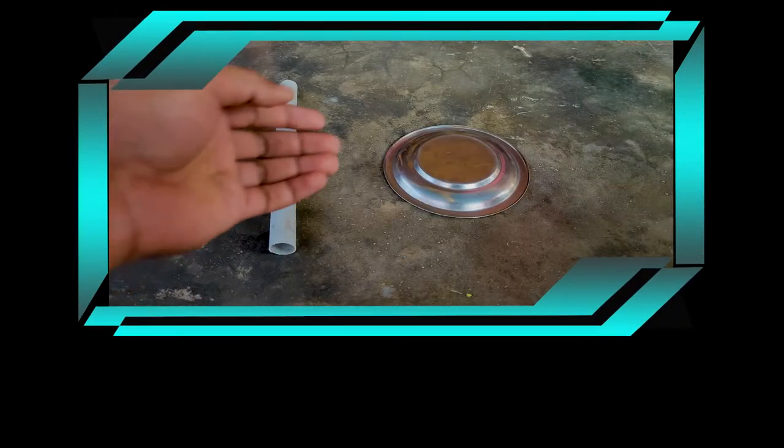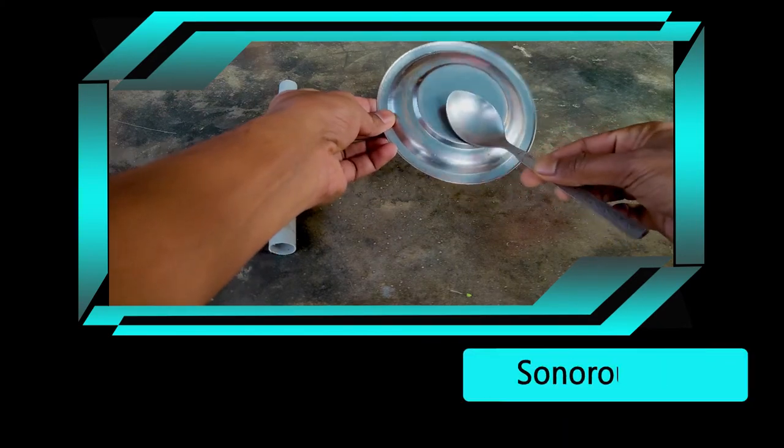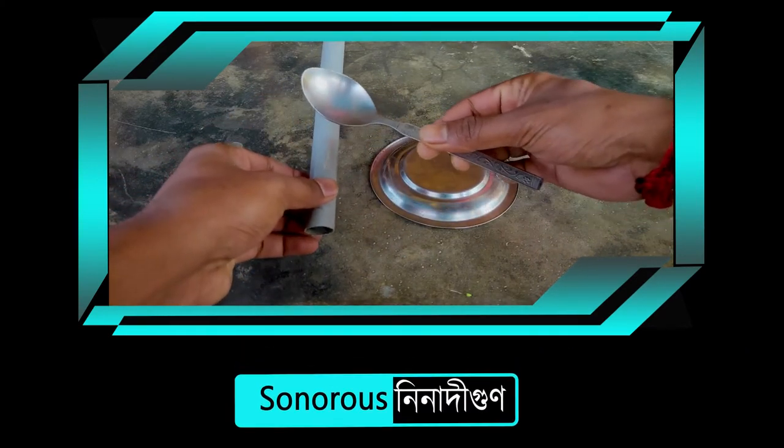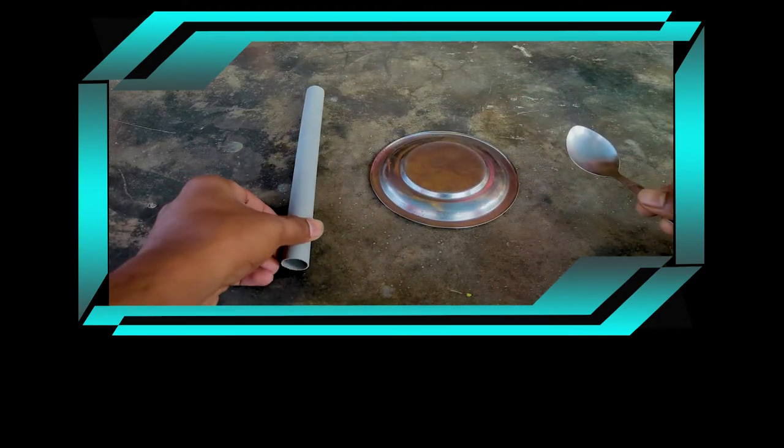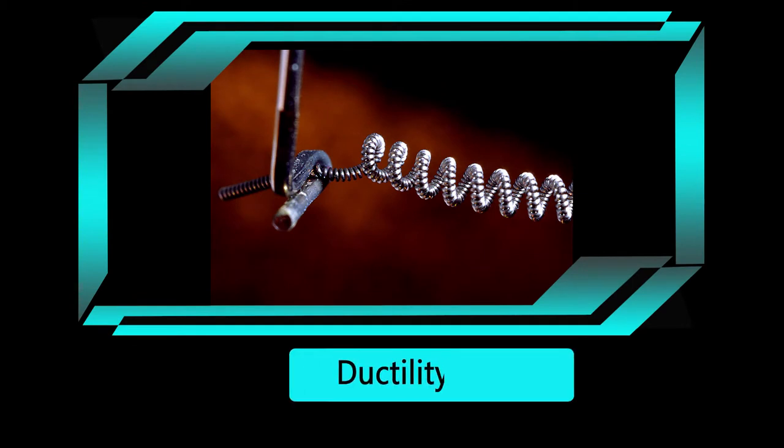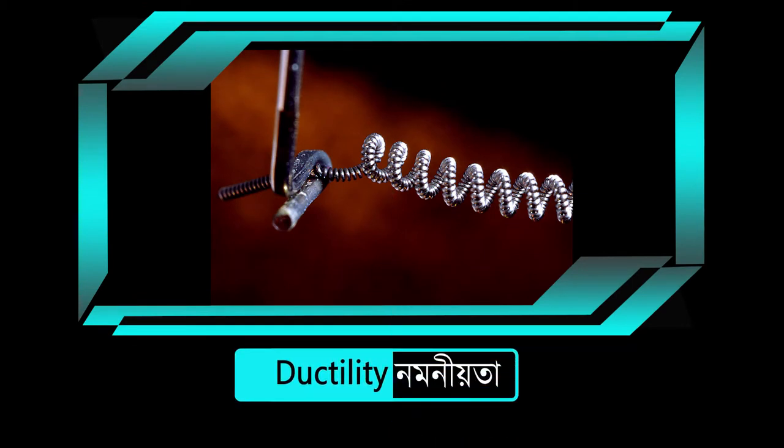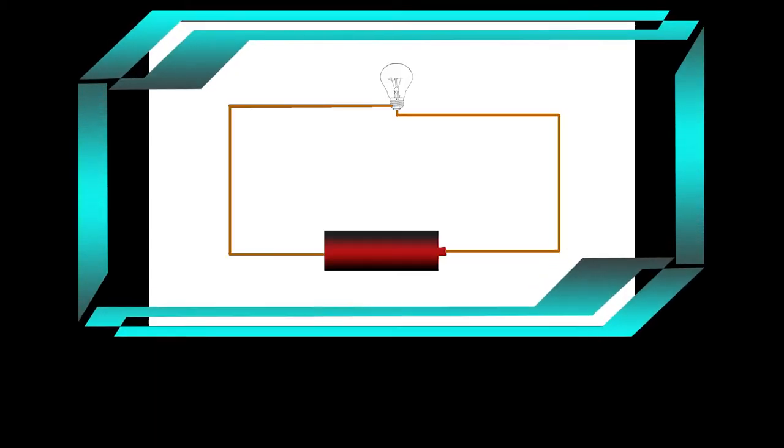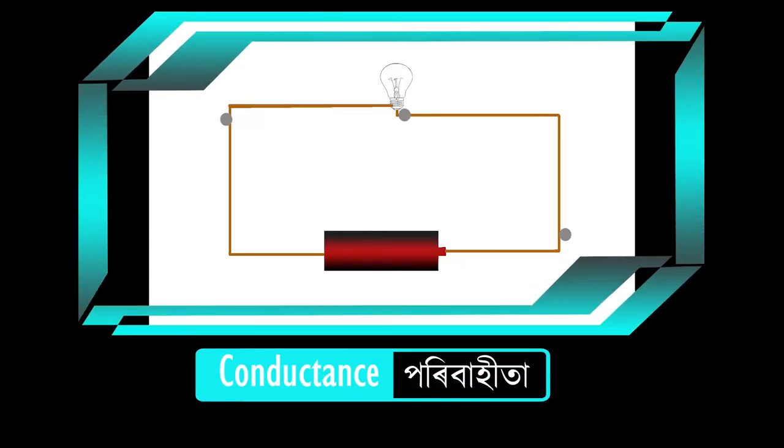When metals strike a hard surface to produce sound, that means metals are sonorous. Again, metals can be drawn into thin wires, that means metals are ductile. Metals are also good conductors of heat and electricity.